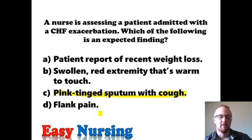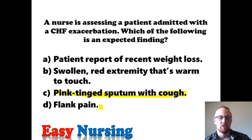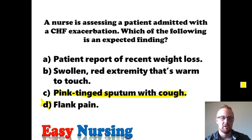The last option is flank pain. There's nothing in CHF that would cause flank pain. That would be more consistent with pyelonephritis, which is a kidney infection — essentially a urinary tract infection that has ascended to the kidneys. There's no reason for what we're seeing in CHF to produce flank pain. So the correct answer for this question is C — pink-tinged sputum with a cough.